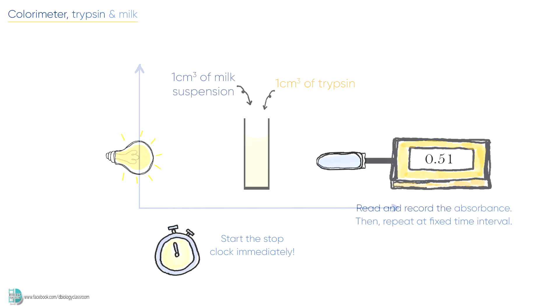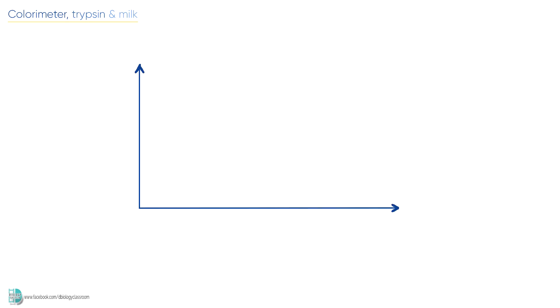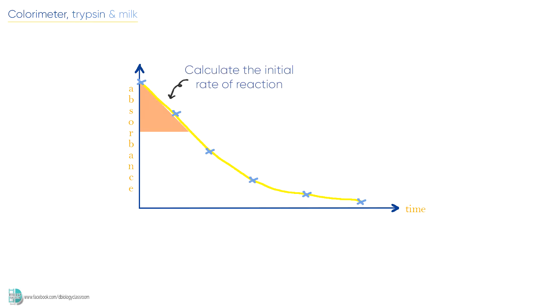Use the data to plot a graph of absorbance against time. By drawing a tangent to the initial part of the curve, you can determine the initial rate of reaction.